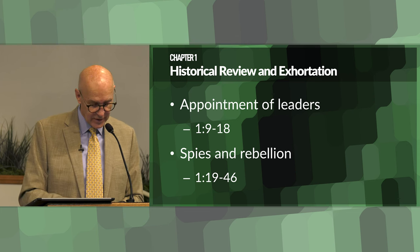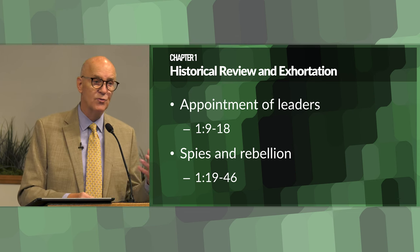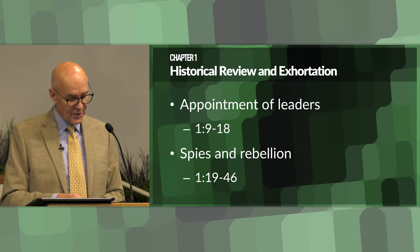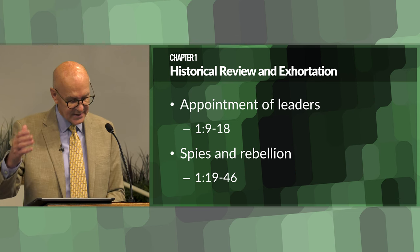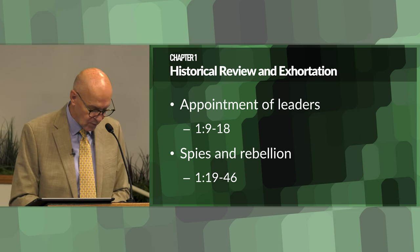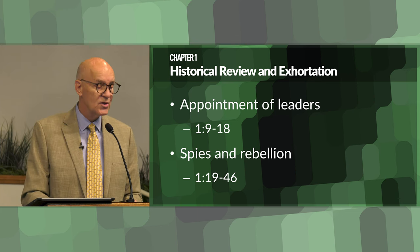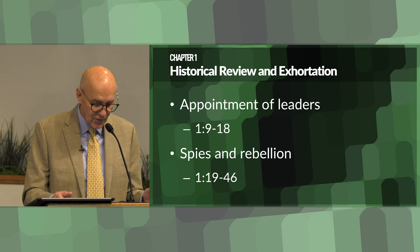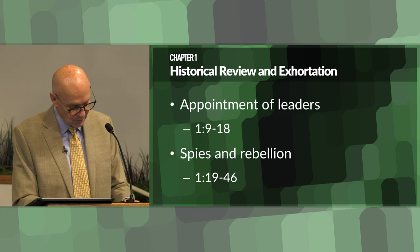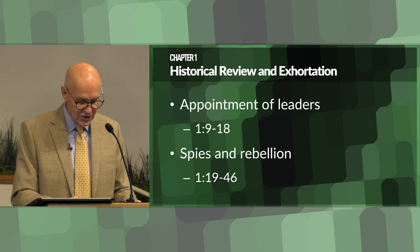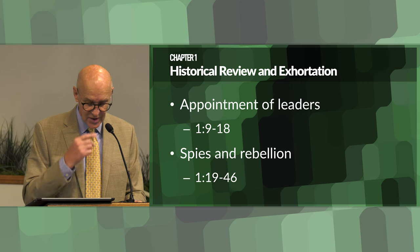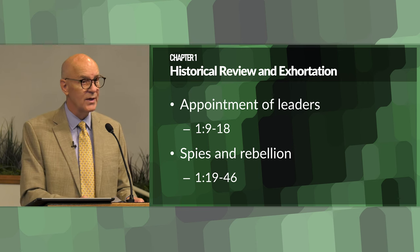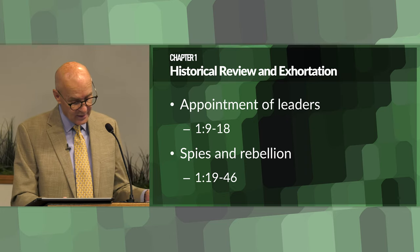Also in chapter one, the recounting of the spies and the people's rebellion — Deuteronomy 1:19–46. Moses recounts the episode of the spies sent to scout the land of Canaan and the subsequent rebellion against God's command due to fear, which led to 40 years of wandering in the wilderness. This review serves as a warning against disobedience and lack of faith in God's promises. If God could do this before due to their disobedience, He could do it again even if they were in the promised land.